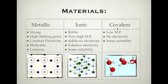Covalent bonds, on the other hand, have a very low melting point. They don't conduct electricity at all, and some of them are soluble. These properties you should be able to explain using the diagrams below.